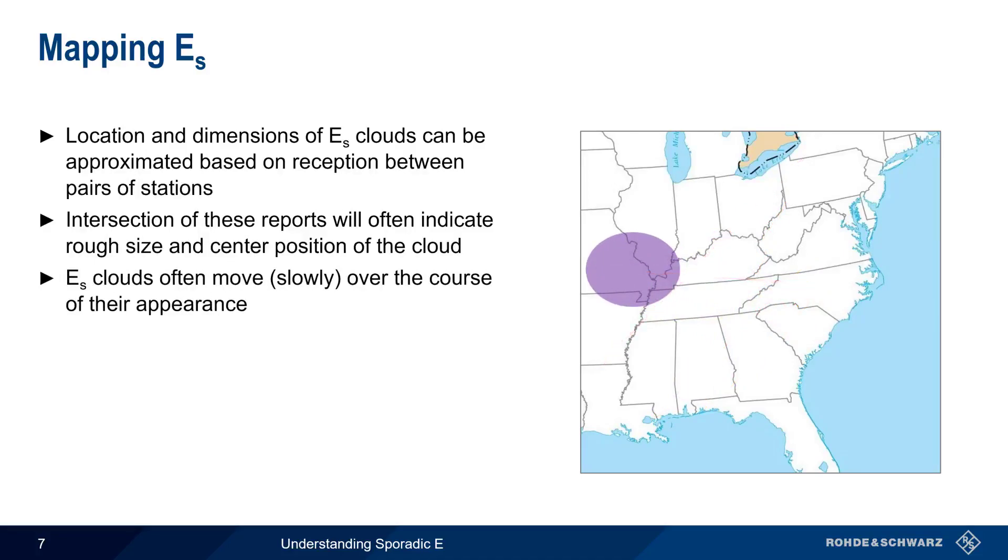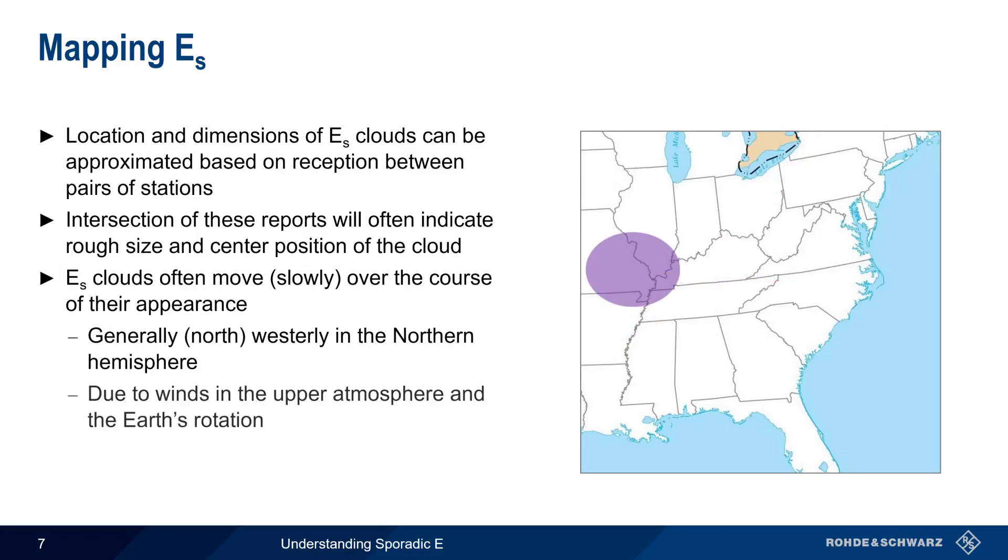In the northern hemisphere, this motion is generally north to northwest, and is caused by both winds in the upper atmosphere as well as the Earth's rotation.